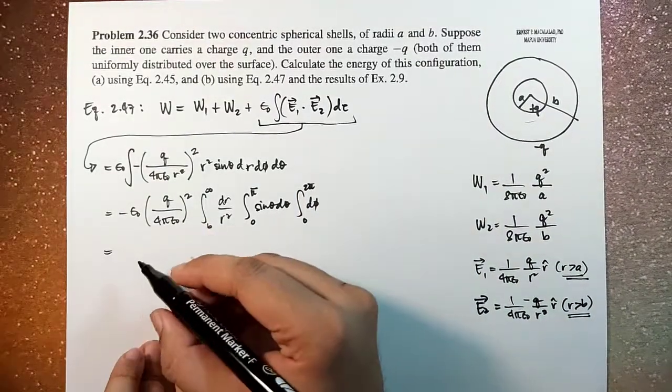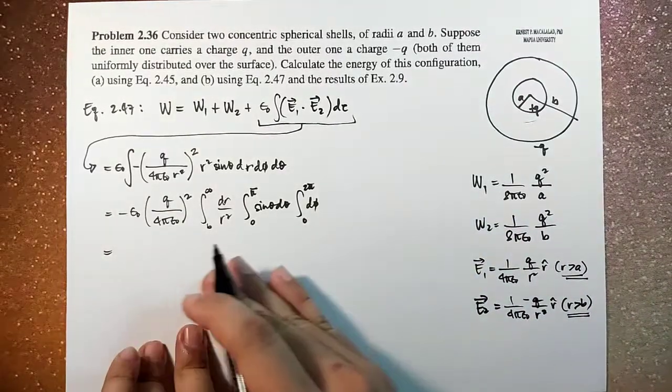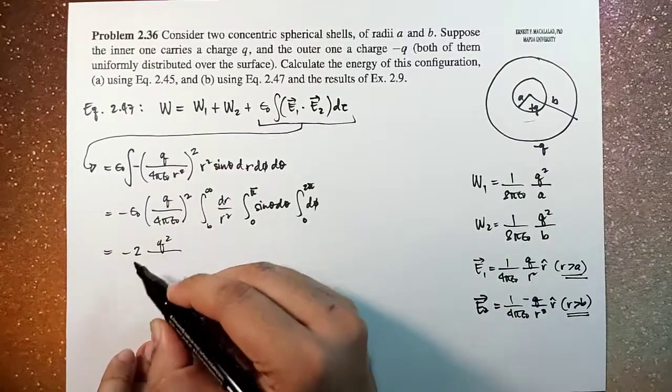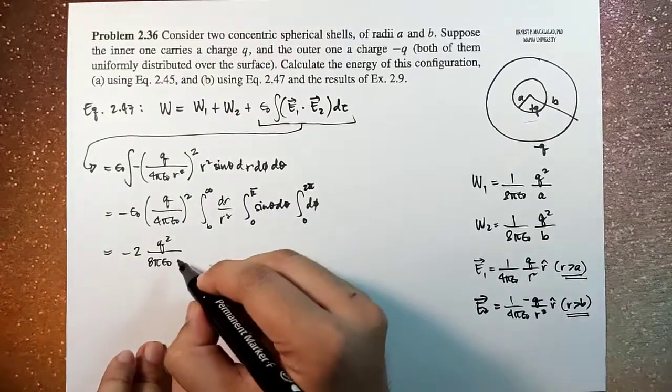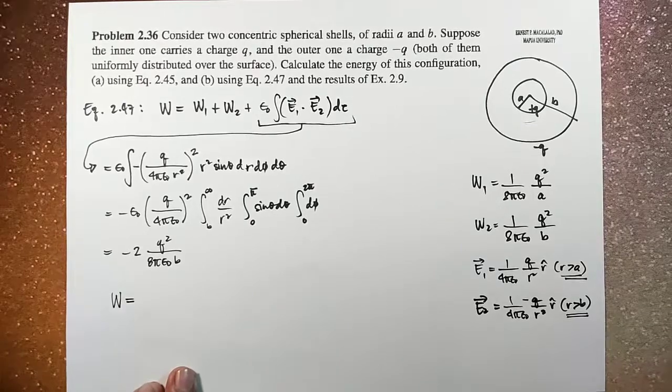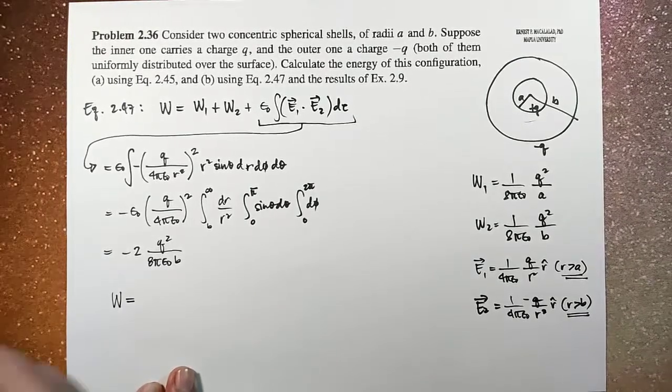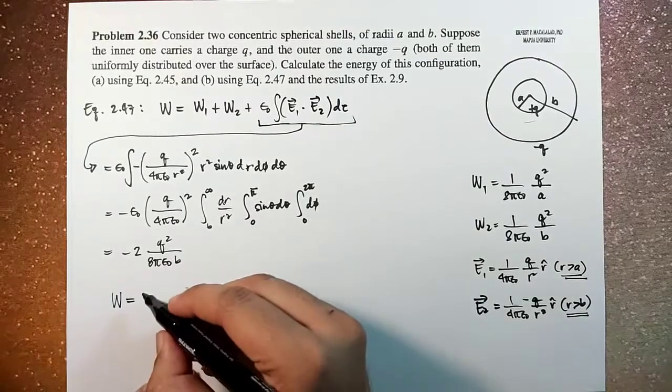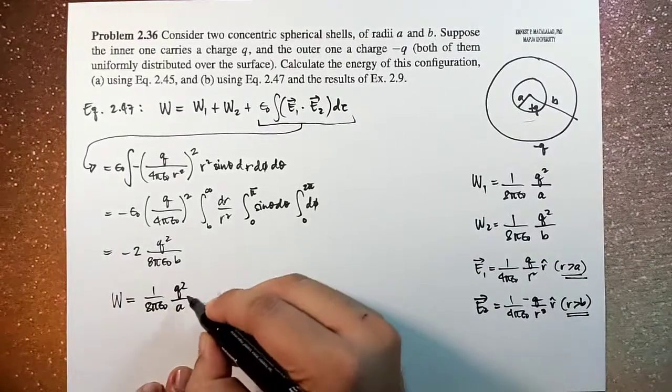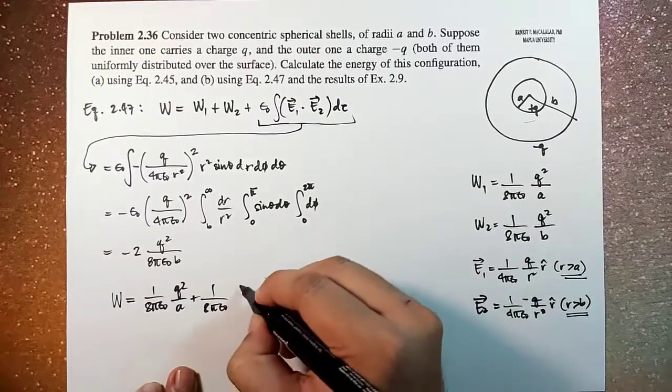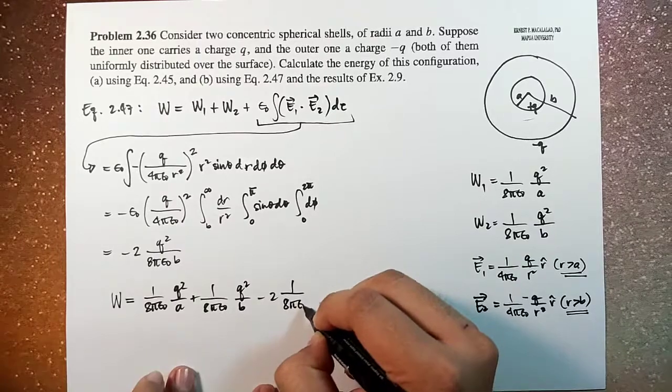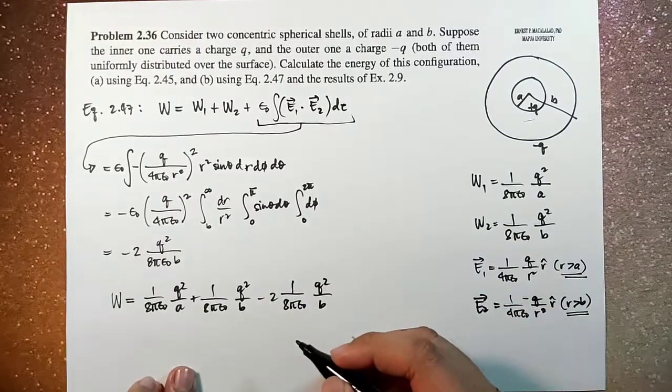Okay, so this is now equal to, again, I'm not going to go into the details of the integration, you can do it yourselves. So this is now equal to negative 2 Q squared over 8 pi epsilon naught B. So this is now equal to W equals 1 over 8 pi epsilon naught Q squared over A, plus 1 over 8 pi epsilon naught Q squared over B, minus 2 times 1 over 8 pi epsilon naught Q squared over B.